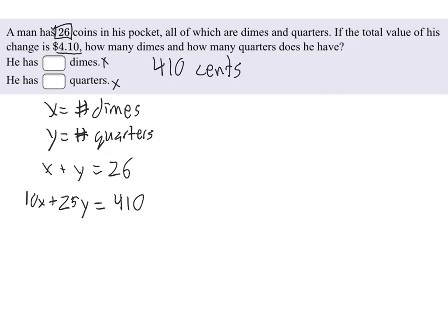So now we have the two equations in our system. Here we have equation number one, and here we have equation number two. Now it's a matter of solving the system to figure out the values of x and y. In this case, probably the substitution method is going to be easiest. What we could do is take equation 1 and get the y by itself.